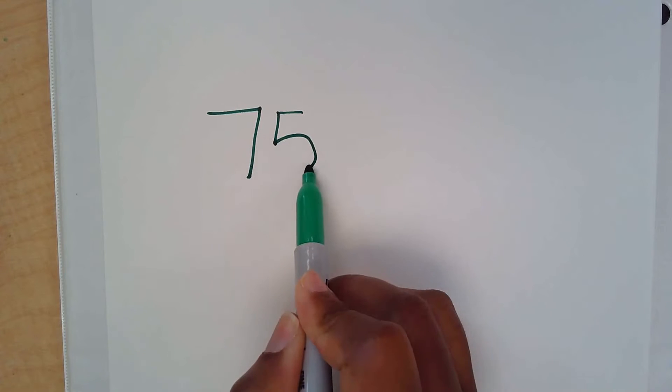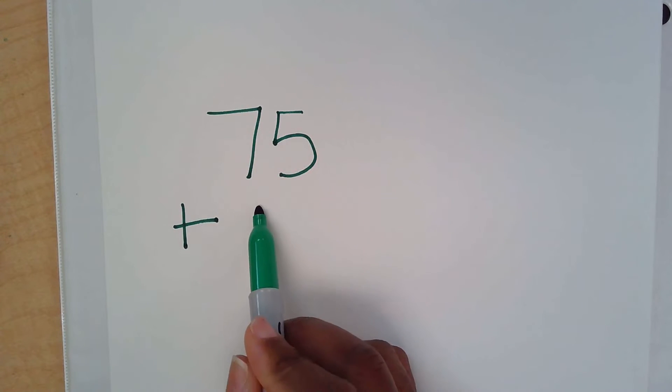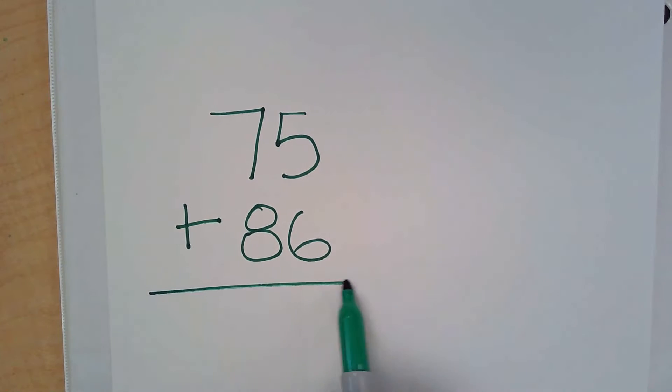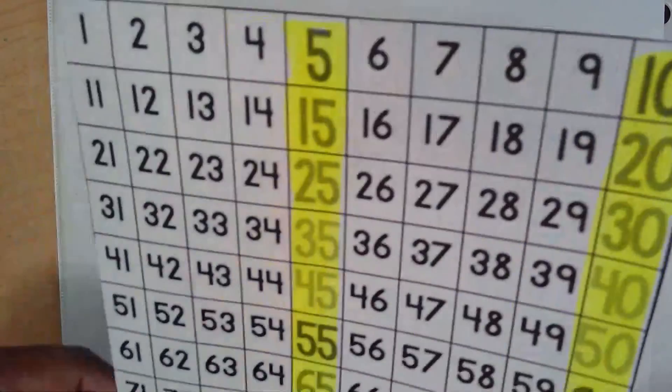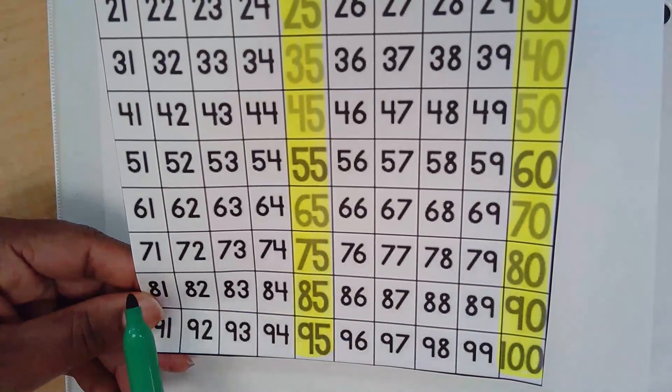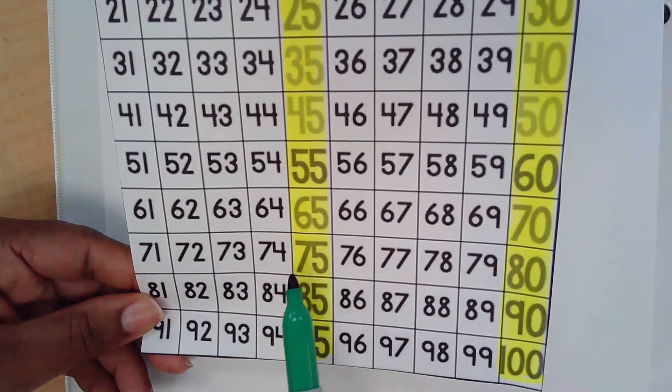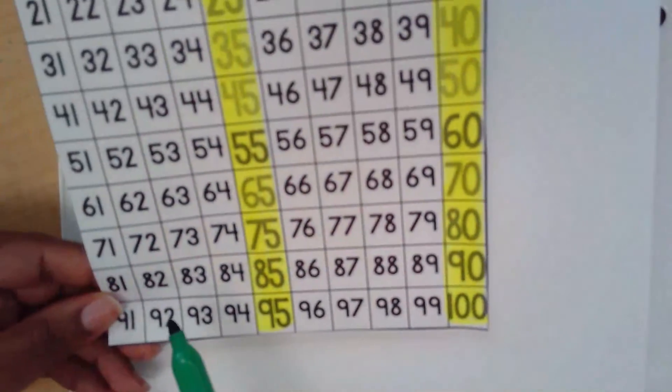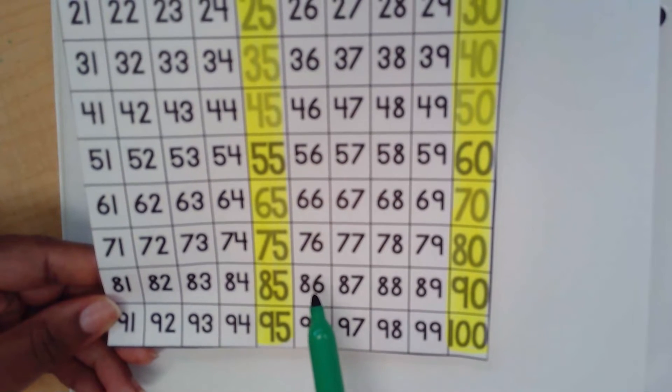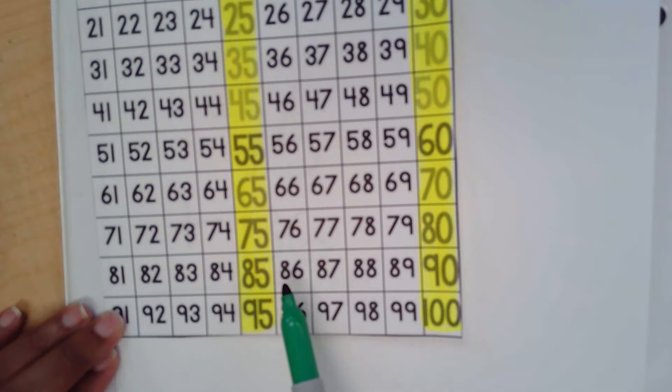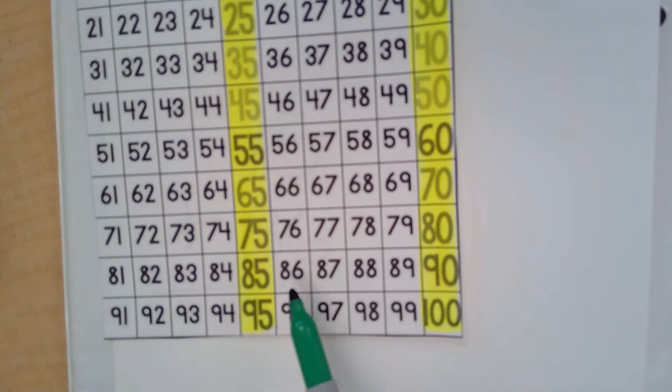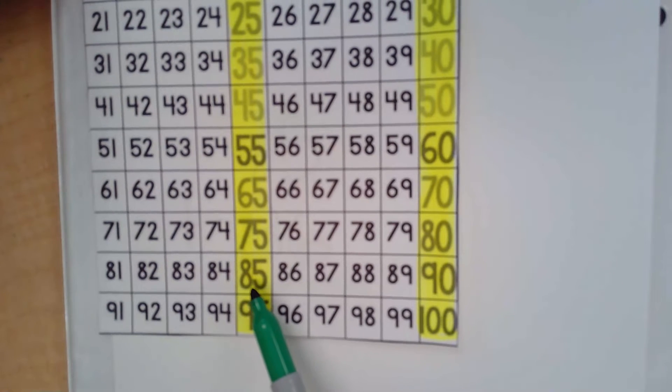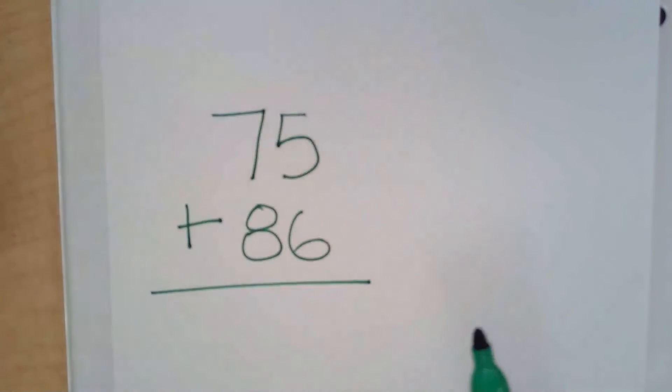Let's try another example. I'm going to add 75 plus 86. Let's go back here and find 75. 75 is actually highlighted. 75 is already a compatible number. Now let's try to find 86. 86 is in this row. Now is 86 closer to 85, or is it closer to 90? 86 is closer to 85, so 85 would be the more compatible of the two numbers. So we'll use 85.